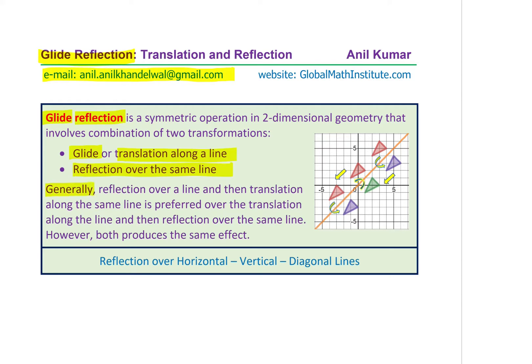Generally, when we say glide reflection, we mean first reflection over the line, and then translation along the same line. However, in some books and in some countries, glide reflection means translation first and reflection after that. So sometimes the operation is reversed and they still call it glide reflection. Both result in the same thing, so it could work out.